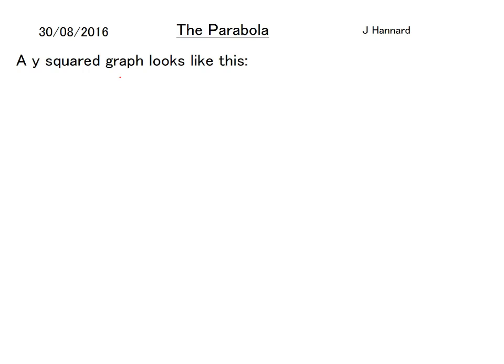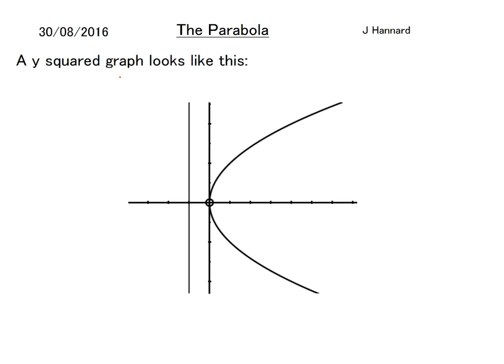So a y squared graph looks a little bit like this. So there you go, it looks like a C rather than a U or an N and it can also go the other way if it's negative and this line on the left here, I don't know if you can see my sort of little red mark, but this line on the left is called the directrix. So that particular graph is called y squared equals 4x and that line there is x equals minus 1 and there's a link between those.